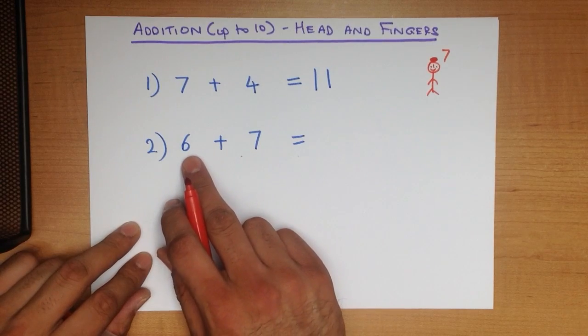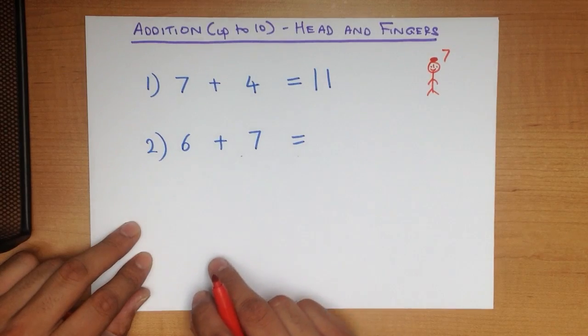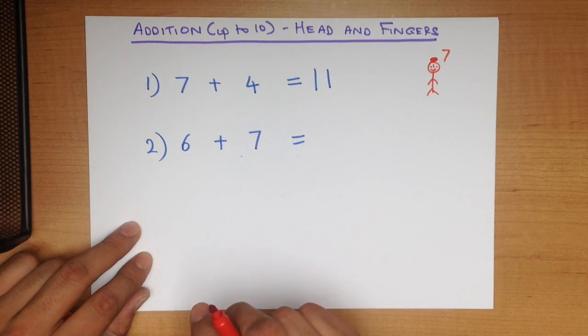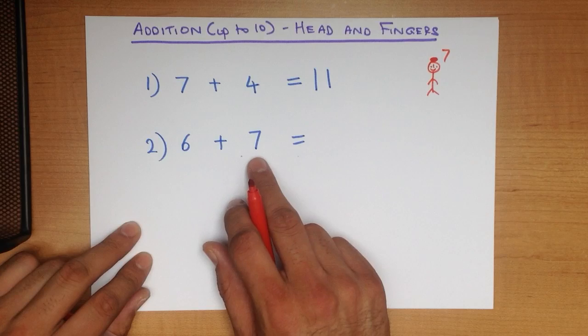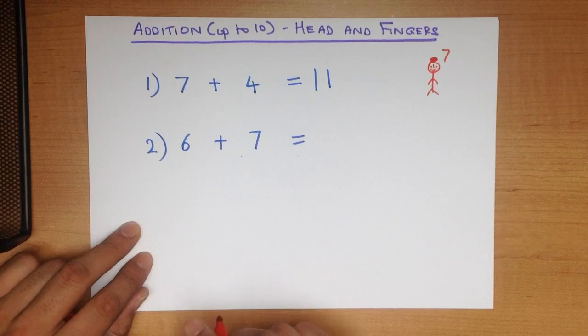We can either have 6 on our head or we can have 7. It is good practice to always have the larger number on our head because it is easier to work out.